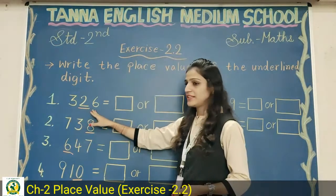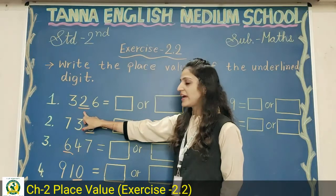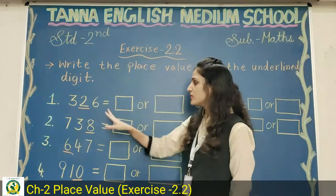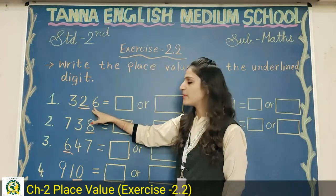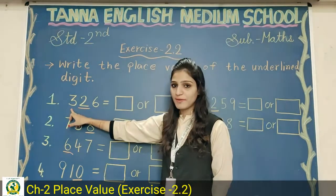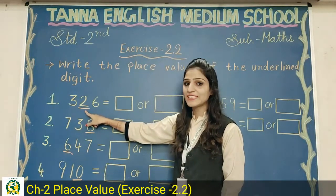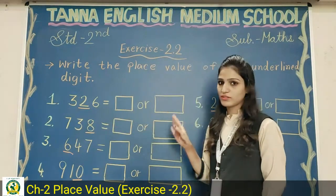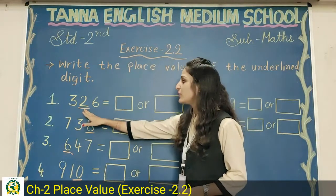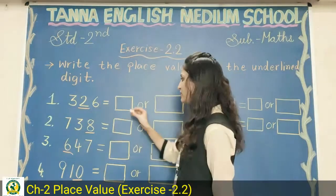Question number one: three hundred and twenty six. Which number is underlined? The digit two is underlined. You have to find the place value of two. Six is at ones place, and this two — which place is it at? Yes, tens place. And three is at hundreds place. So two is at tens place. Now, in the first box, you have to write twenty, because two tens means twenty.